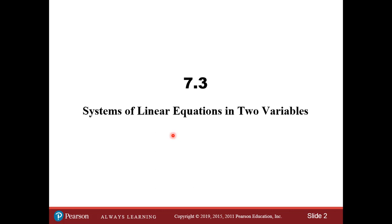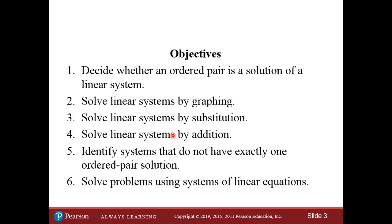In this section we're going to talk about systems of linear equations in two variables, meaning two or more equations. We'll learn how to decide whether an ordered pair is a solution of a linear system, how to solve linear systems by graphing, by substitution, and by addition — also called elimination, because you're eliminating one of the variables. We'll also learn to identify systems that do not have exactly one solution — there may be more than one, or there may be no solution — and we'll solve problems using systems of linear equations.